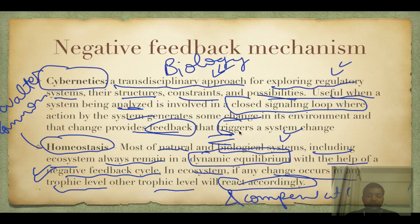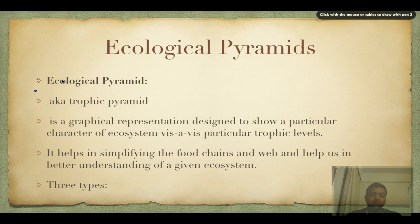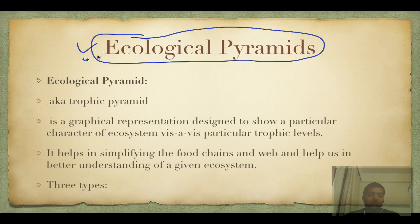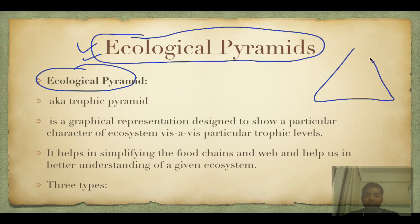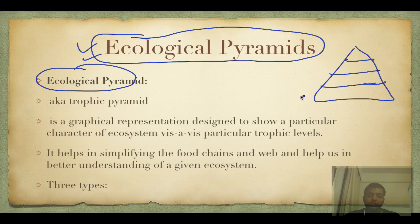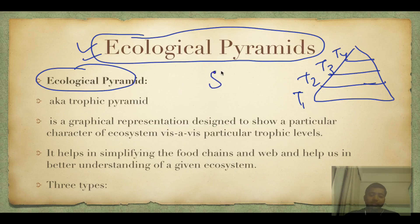Now we move on to ecological pyramids. These are called ecological pyramids — T1, T2, T3, and T4. This is a straight ecological pyramid, also called a trophic pyramid because it represents trophic levels. It is a graphical representation designed to show a particular character of an ecosystem.